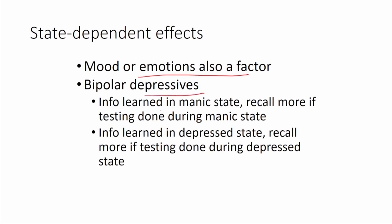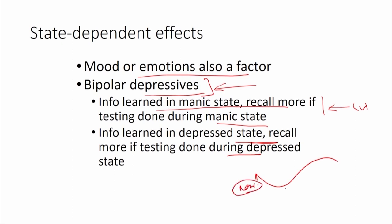Experiments were done on bipolar depressive individuals. Information that people learned during the manic state was better recalled when tested under the manic state than when tested under the depressive state. Manic-depressive people go through phases: the mania phase where they are hyperactive, and the depression phase where they are very depressed. This is bipolar disorder — they keep switching between mania and depression. If they learn something when very excited and try to remember it when depressed, it does not work well — recall is poor.